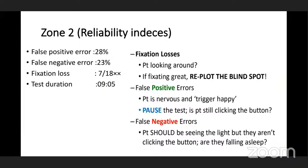If values are in fraction, convert to percentage and check. For false positive errors: even if there is no light, the patient may respond to the sound of the machine — these patients are called 'trigger happy.' If the value is more than 33%, it is unreliable. We need to pause the test and explain that the patient should press the button only when they see the light.